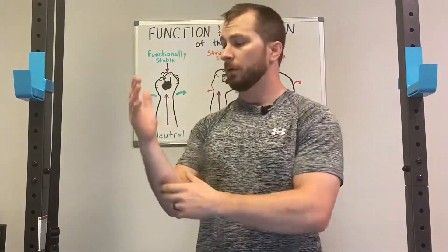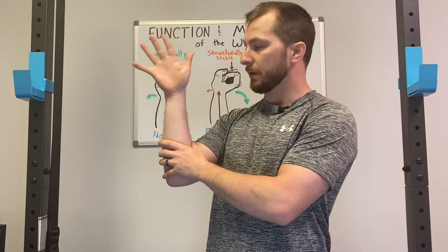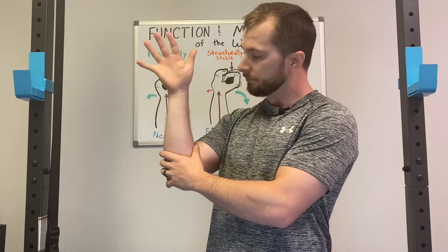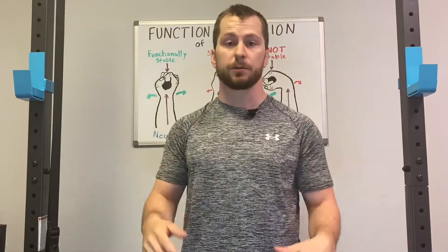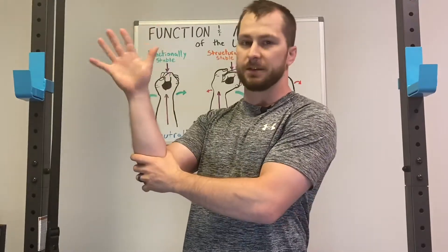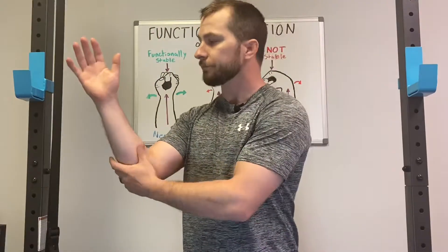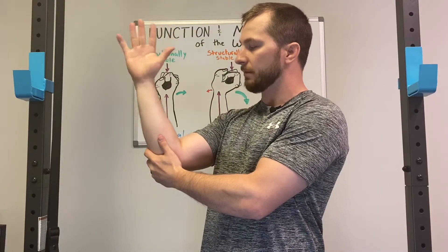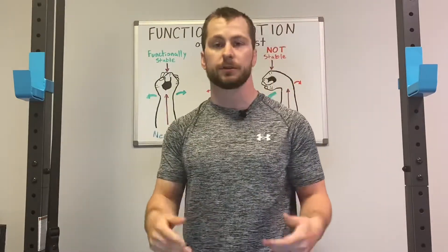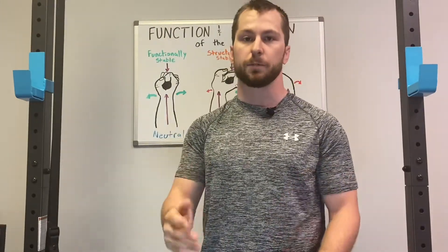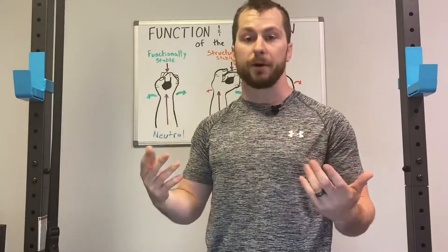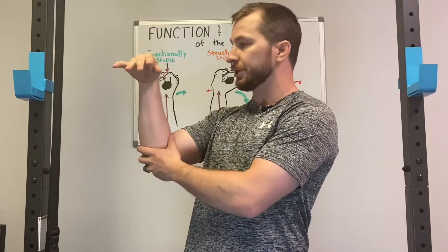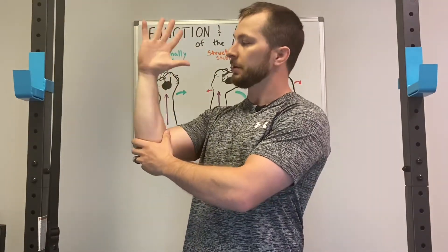We also have ulnar deviation — your hand moving down towards the ulna, or the pinky side — controlled by your flexor and extensor carpi ulnaris group. The carpi muscles deviate the hand. Then radial deviation, the hand moving down towards the thumb side or the radius, is controlled by your flexor and extensor carpi radialis group, with the extensor group having a longus and brevis portion.